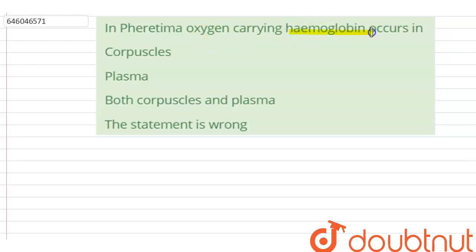Pheretima: oxygen carrying hemoglobin occurs in - and options are corpuscles, plasma, both corpuscles and plasma, the statement is wrong.